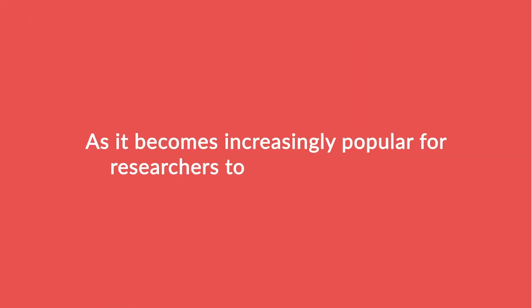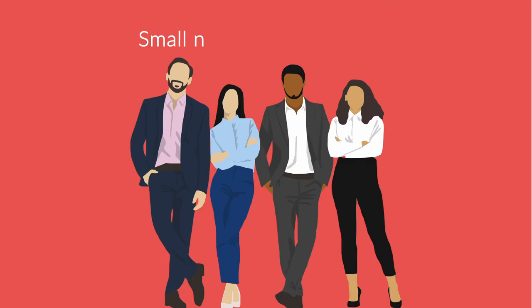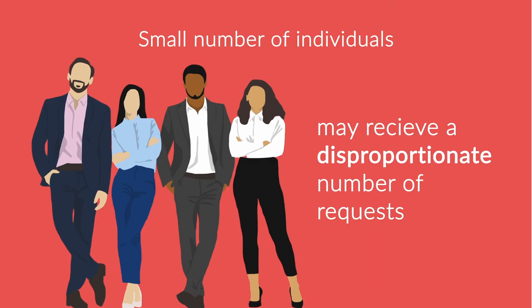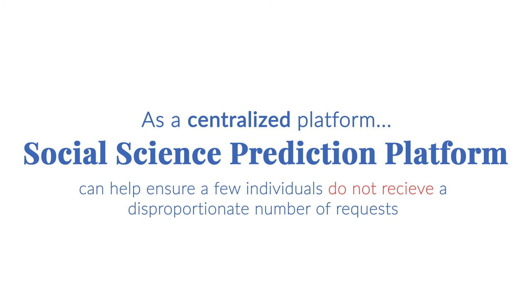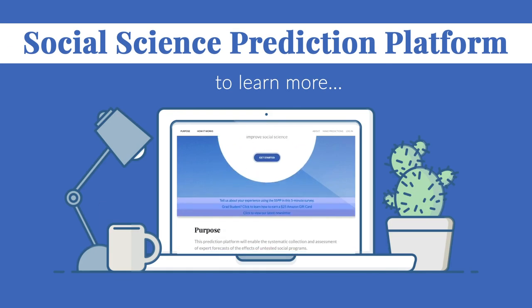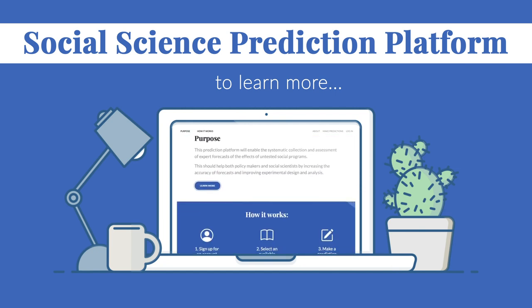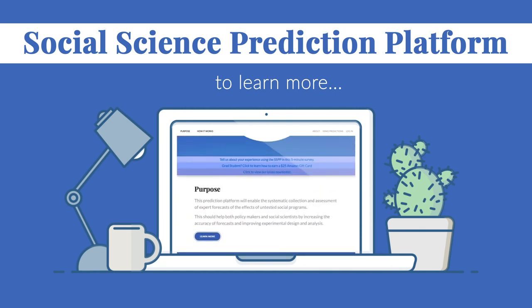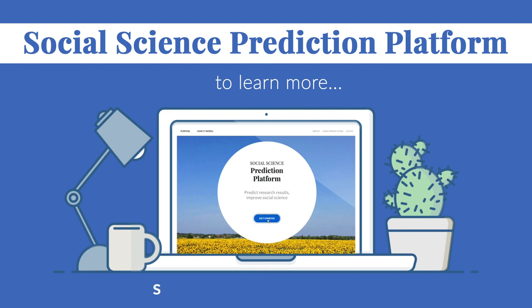As it becomes increasingly popular for researchers to collect forecasts, a small number of individuals may receive a disproportionate number of requests. As a centralized platform, the Social Science Prediction Platform can help ensure that this does not happen. If you would like to learn more about our platform, including guidance on how to develop a survey and start collecting predictions, please visit our website at socialscienceprediction.org.